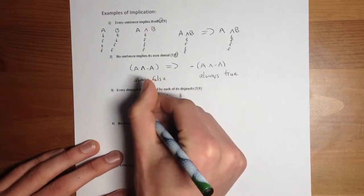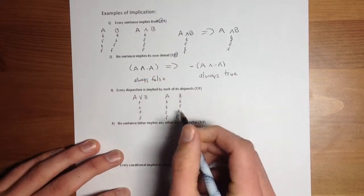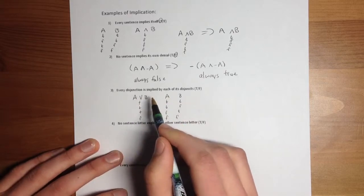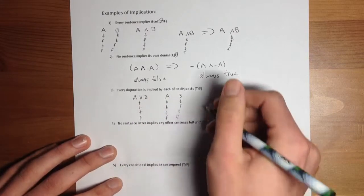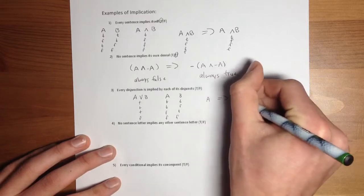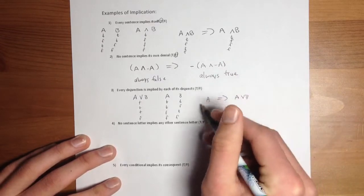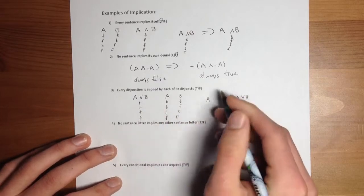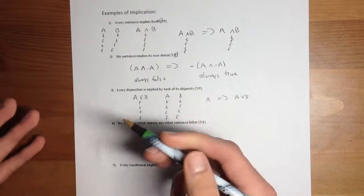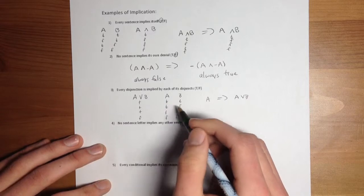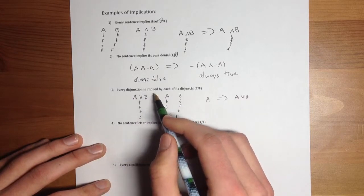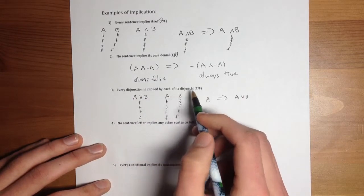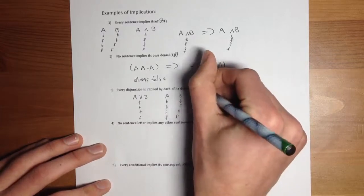So here, this is true, true, true, false. So every disjunction is implied by each of its disjuncts. So let's just try A implies the entire disjunction. Was there ever a time when this A is true and that false? Never, because all a disjunction needs is one of its disjuncts to be true. So every disjunction is implied by each of its disjuncts. That is, of course, true.